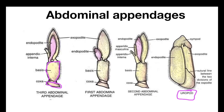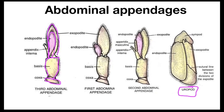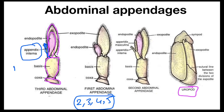From the cylindrical basis, a flat leaf-like structure arises. These flat leaf-like structures are called endopodite and exopodite. Endopodite is smaller and exopodite is bigger. An important structure called appendix interna also comes from the basis of the second, third, fourth, and fifth abdominal appendages. This appendix interna is not present in the first pair of abdominal appendages.